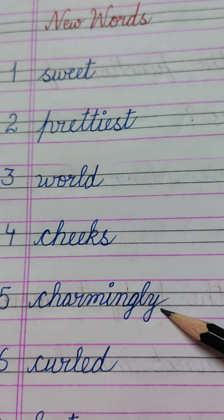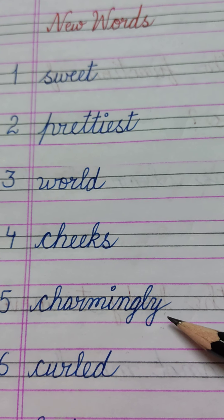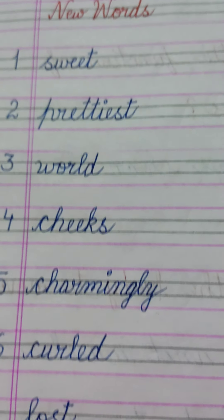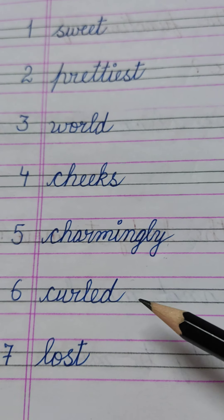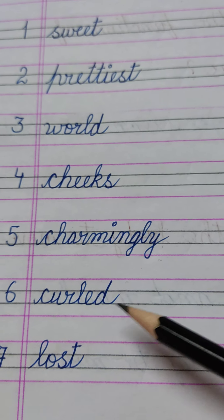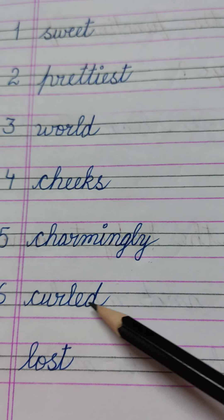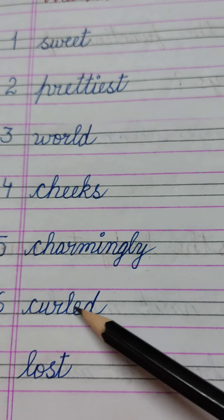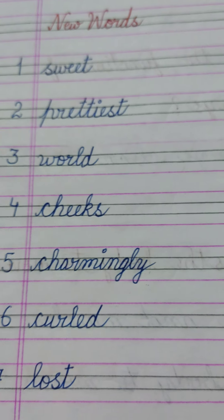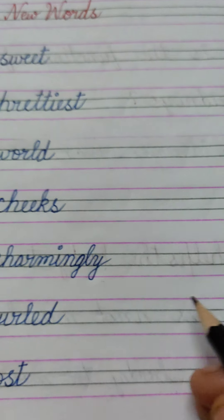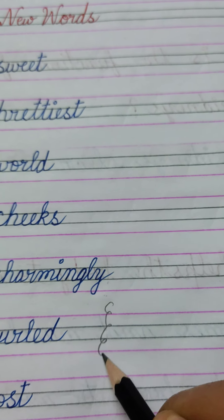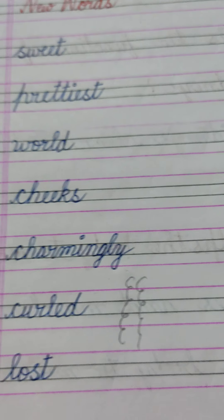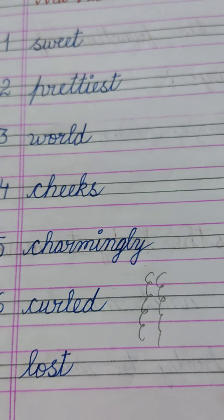The fifth word is 'charmingly'. Charmingly means sundar — beautifully. The sixth word is 'curled'. C-U-R-L-E-D, curled. Curled means gungrali — जैसे किसी के बाल गुंग्राले होते हैं, curled होते हैं.